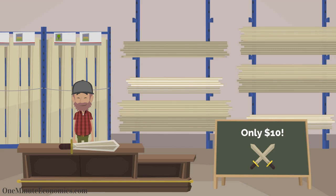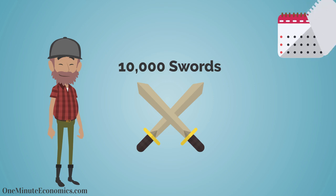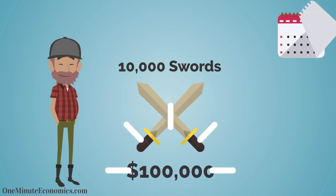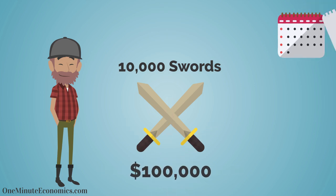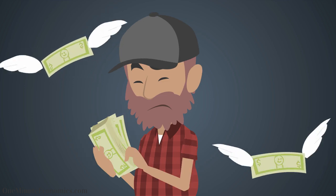Tom runs a one-man business which revolves around him building wooden swords that he sells at 10 bucks each. Last year he sold 10,000 swords, generating a grand total of $100,000. We call this amount his revenue.